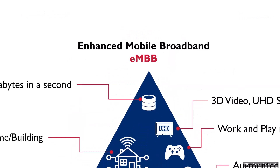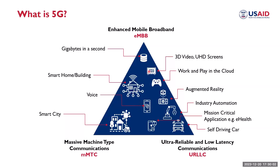Enhanced Mobile Broadband, or eMBB, is one of the primary use cases of 5G — to provide faster, more reliable, and more efficient mobile broadband services. With high data transfer rates and lower latency, 5G supports much faster download and upload speeds, allowing users to stream high-quality video, download large files, and browse the internet with minimal delay. eMBB is particularly useful for high-bandwidth applications like virtual and augmented reality, gaming, and multimedia.